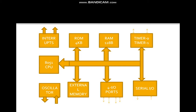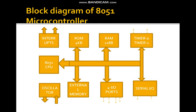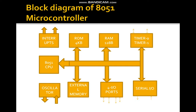This is the block diagram of the 8051 microcontroller. It includes: interrupts, ROM of 4KB, RAM of 128 bytes, Timer 0, Timer 1, the 8051 CPU, an oscillator, external memory interface, 4 input-output ports, and serial IO lines.